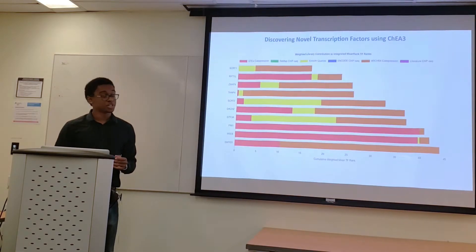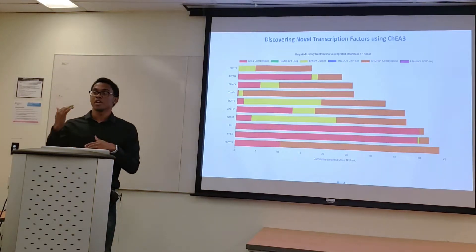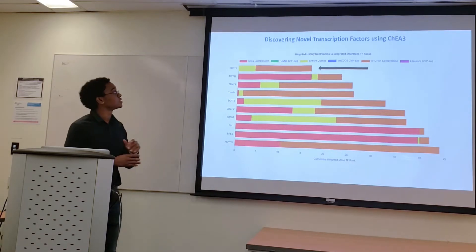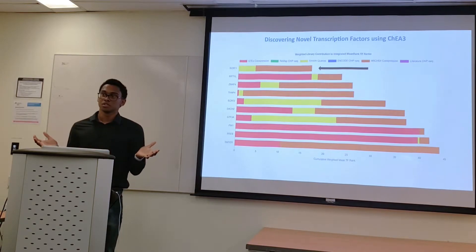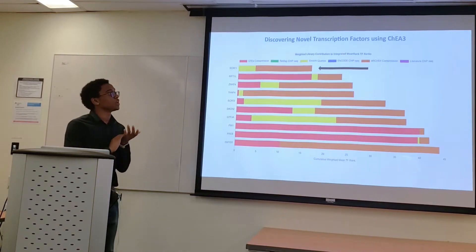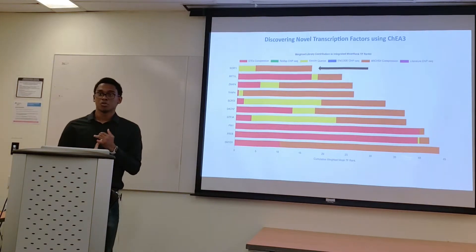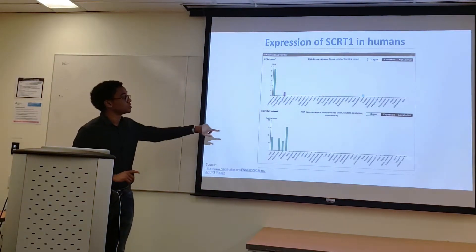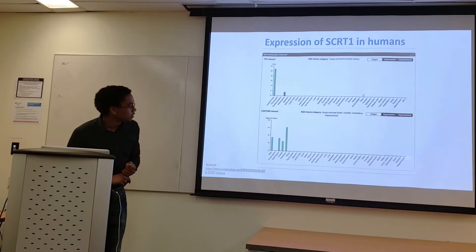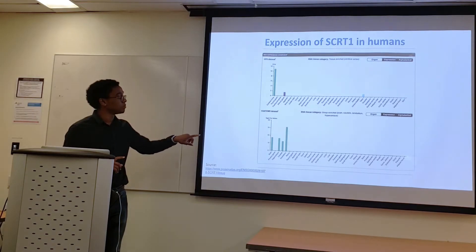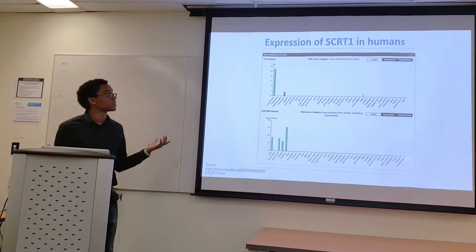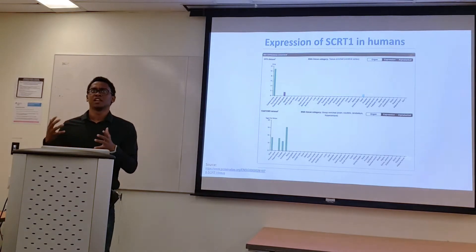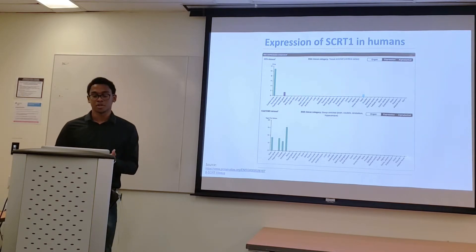We then turn to my CHIA3 analysis, which gives a ranked set of transcription factors for analysis. One transcription factor of interest was SCRT1, which stands for scratch family transcription factor. It was of interest because SCRT1 was found to be understudied, with only five publications on PubMed within the last 16 years. Also, it is exclusively found within the cerebral cortex, the brain, the hippocampus, the cerebrum, and the pallidate. The cerebral cortex and hippocampus are all implicated within Alzheimer's — the cerebral cortex in cognitive function and motor issues, and the hippocampus in memory.